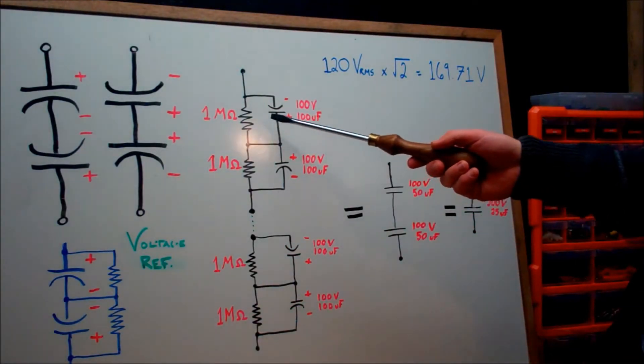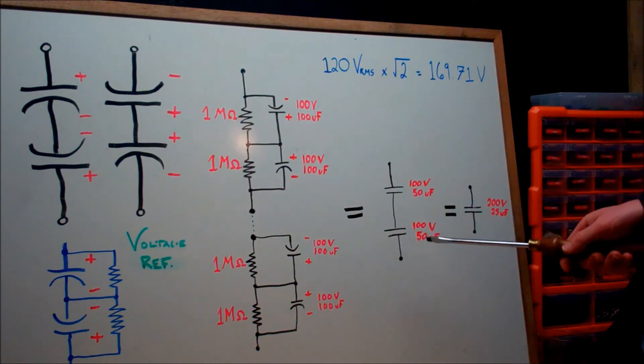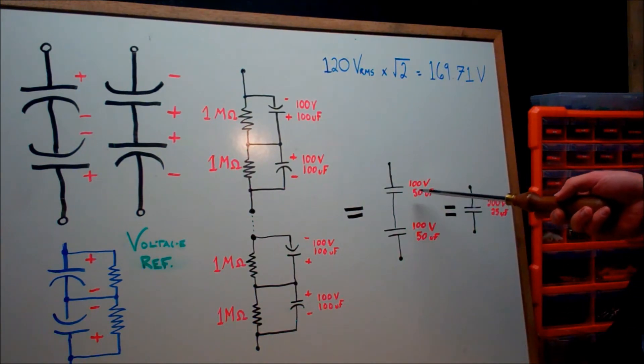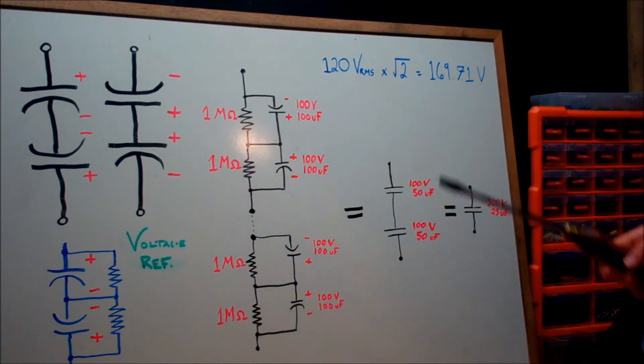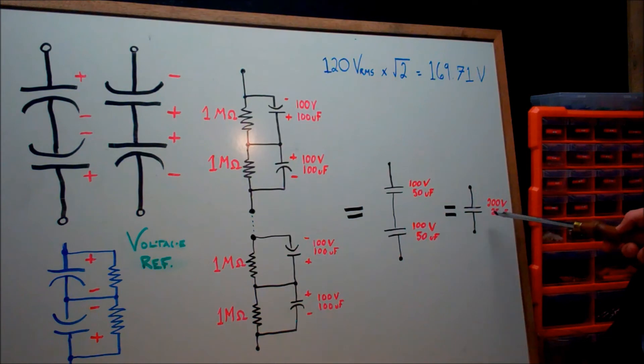Now when we simplify these circuits, this is what we have. We have two non-polarized electrolytic capacitors in series, and they have a voltage rating of 100 volts each. Remember that we reduced the total capacitance we have, which is now going to be 50 microfarads. And because these are in series, that means we're going to have this circuit at the end with a voltage rating of 200 volts but a capacitance rating of 25 microfarads.